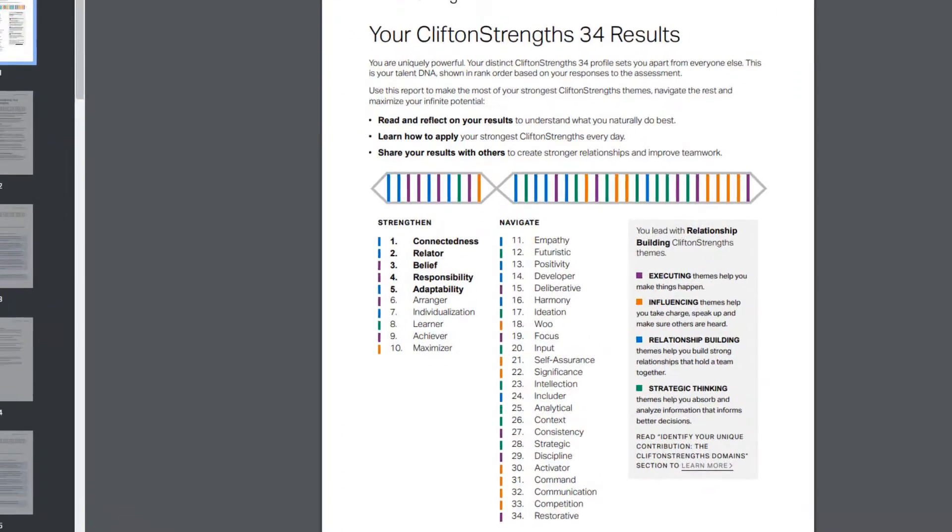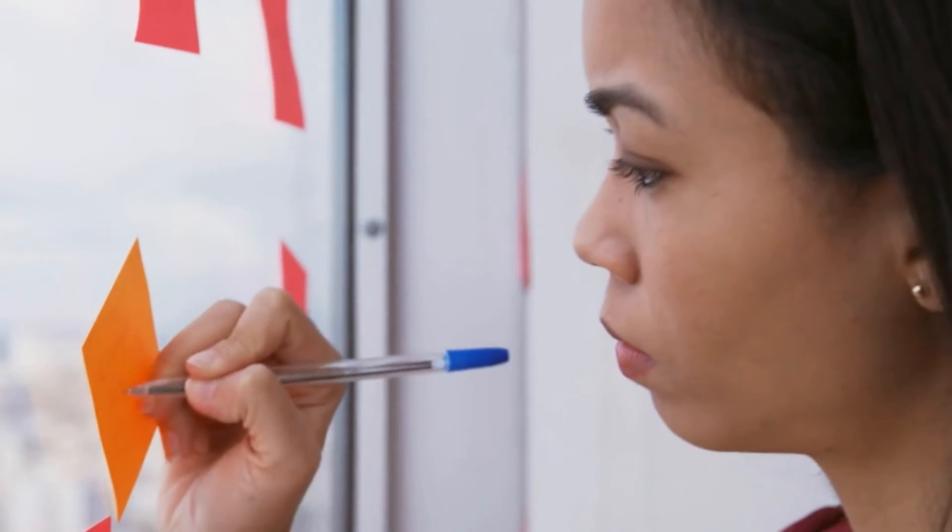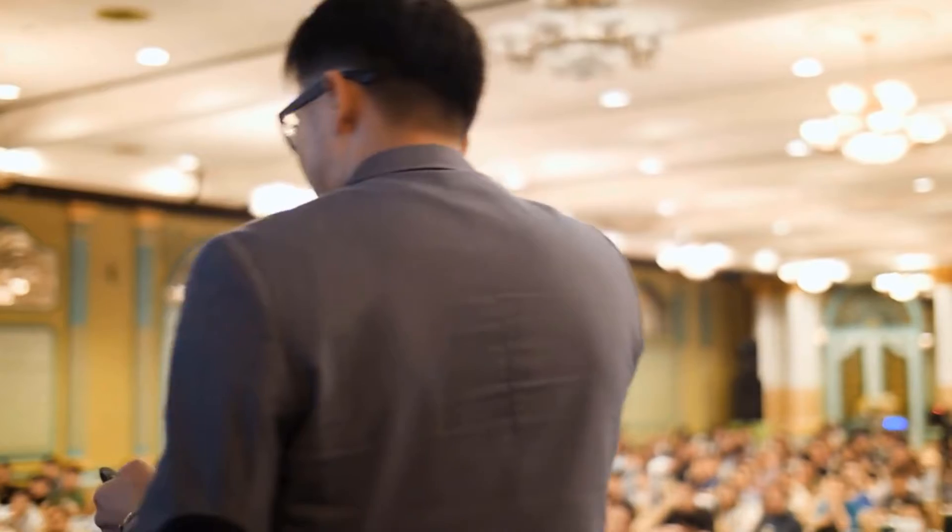I remember when I was first learning about my talent themes, I was talking to somebody about how adaptability shows up in my life. I have adaptability as my number five and arranger as my number six. When I think of my adaptability, I think about my ability to be flexible — I'm able to easily shift what I'm doing to accommodate something that might come up. I very much use arranger in conjunction with my adaptability to be able to reshuffle tasks or even my schedule. The gentleman I was speaking with came up with a completely different example: he used adaptability to be able to do impromptu speeches, discussions, or even presentations. He uses his adaptability to be spontaneous in his speaking.